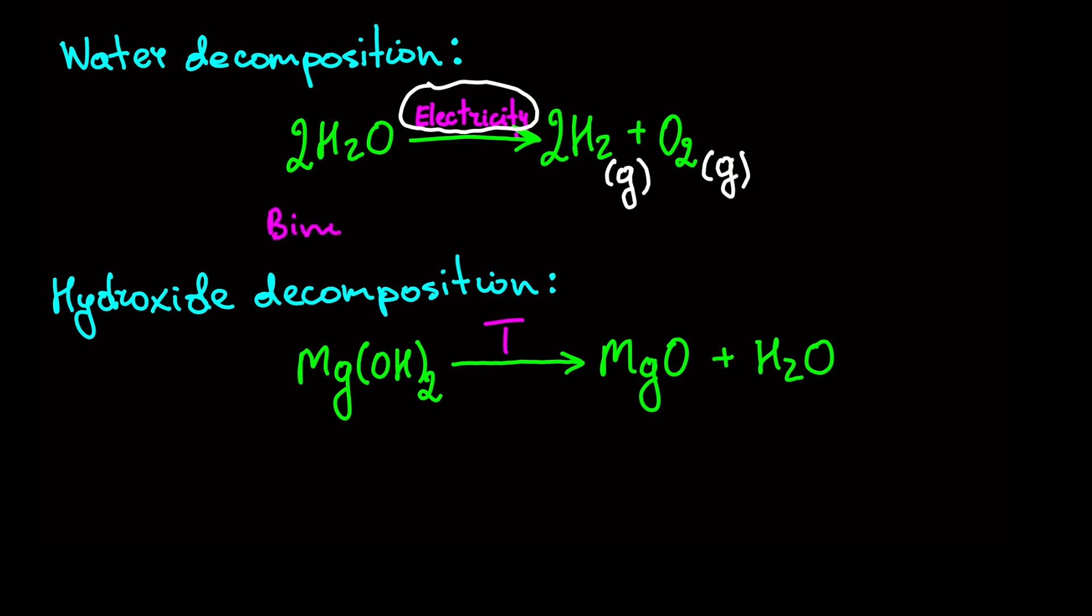Hydrogen and oxygen gas are produced in this reaction. Water is a binary compound, and all binary compounds are composed of just two elements. When they undergo a decomposition reaction, always two separate elements form.